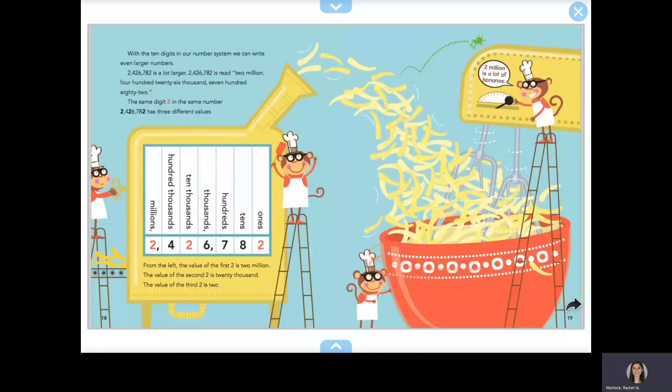With the 10 digits in our number system, we can write even larger numbers. 2,426,782 is a lot larger. 2,426,782 is read 2 million, 426 thousand, 782.